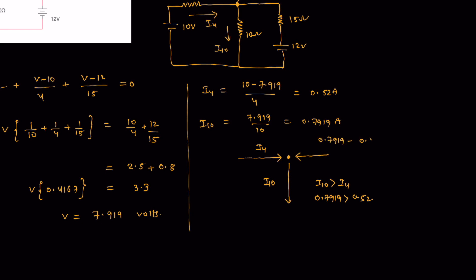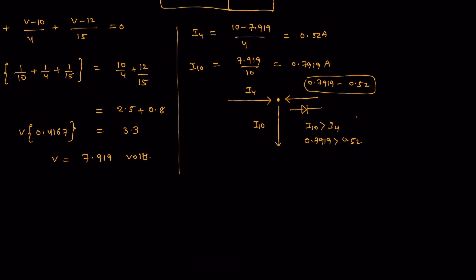Because 0.7919 is much greater than 0.52, the remaining balance current is 0.7919 minus 0.52. Basically the current is flowing in the opposite direction. The diode is connected like this but the current is flowing in the opposite direction, which indicates clearly that the diode is in off condition.